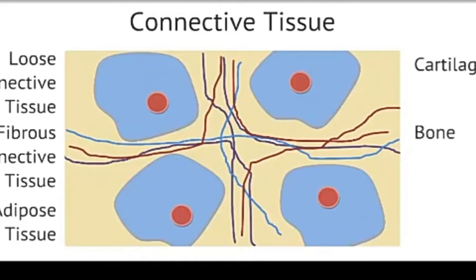Bone is also considered a connective tissue. The extracellular matrix of bones consists of rubbery protein fibers, which are hardened by deposits of calcium salts. The bones of our body provide support and protection, as well as allowing the body to move.